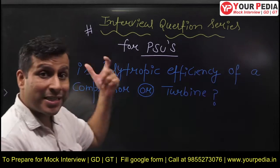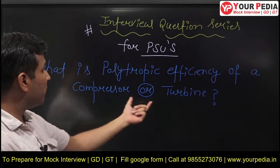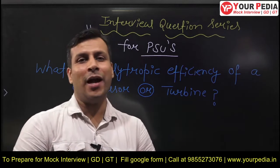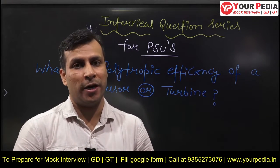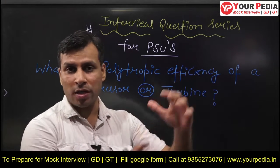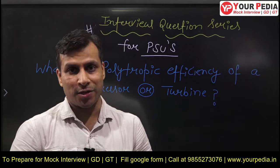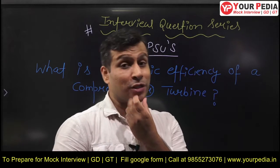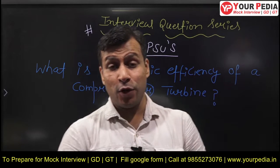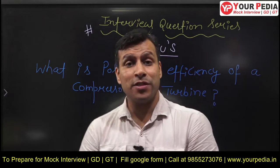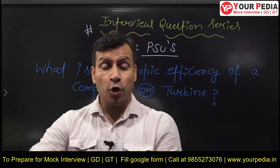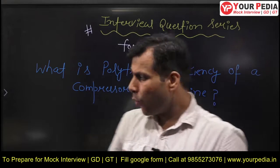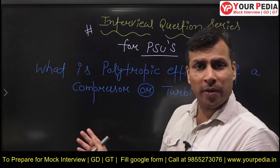The exact question is: what is polytropic efficiency of a compressor and turbine, and why is it required? That was the question which was asked. Now, we already know about first law efficiency, we know about second law efficiency, we know about isentropic efficiency. So what is this polytropic efficiency?